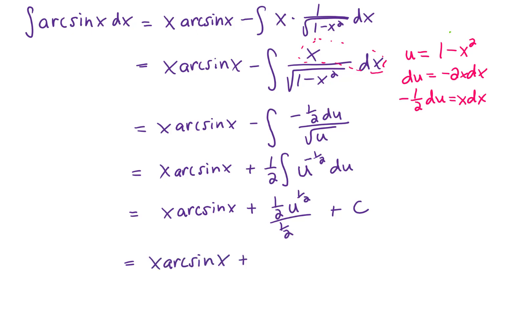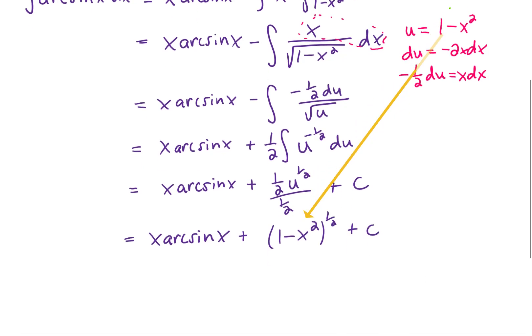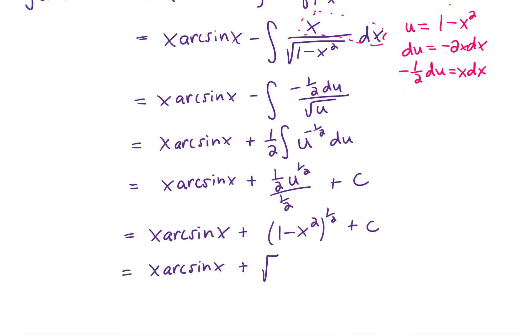We can then substitute back in what u was. u was 1 minus x squared. And this final answer might look just a little bit better if we rewrite that 1 half power as a square root. At least I think it looks a little bit better that way.